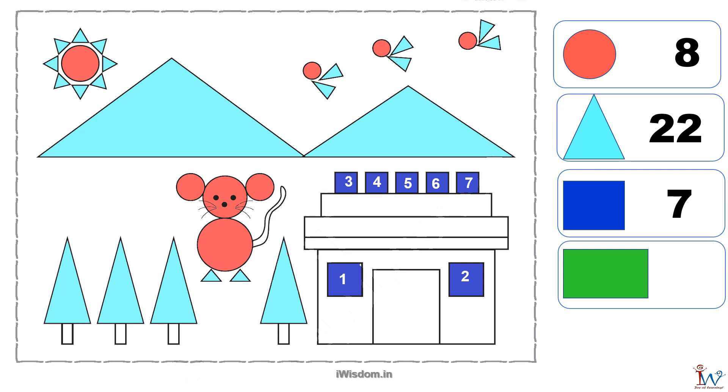Excellent. Now only rectangles are remaining. Who wants to count rectangles? Mr. Wiz, let me count. House is full of rectangles. One, two, three, four and five. There are a total of five rectangles.